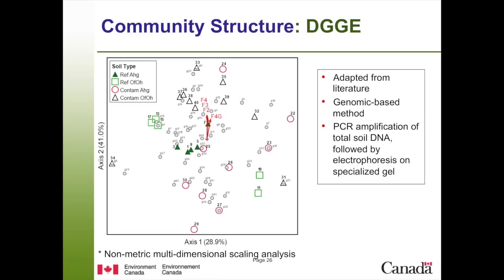We also did a non-metric multidimensional scaling analysis. Each soil type is represented by large triangles or circles, and small gray dots are each of the bands from DGGE. We compared this to 24 different physical-chemical characteristics of the soil. Out of all soil characteristics, the only one that caused over 30% clustering of bands was the petroleum hydrocarbons.